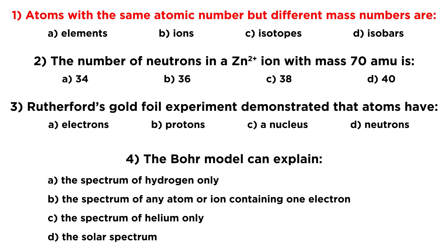For this first question, atoms with the same atomic number but different mass numbers — that is going to be isotopes. Remember, if they have the same atomic number, then they are the same element by definition. Ions has to do with differing numbers of electrons, and isobars is a totally different concept altogether. So by definition, isotopes are nuclides that have the same atomic number, meaning they belong to the same element, but they have different mass numbers — like carbon-12, carbon-13, carbon-14, that sort of thing.